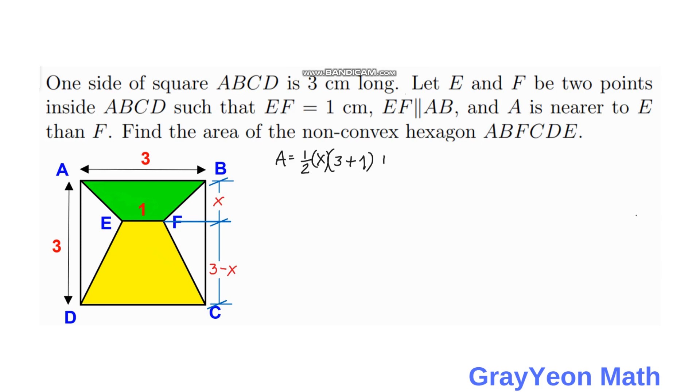And for the other trapezoid, we have one half times the height, which is 3 minus x, times base 1 plus base 2, which is 3 plus 1 again.